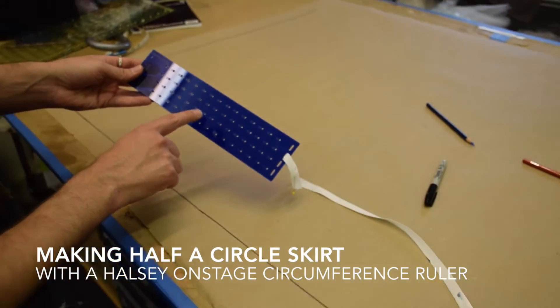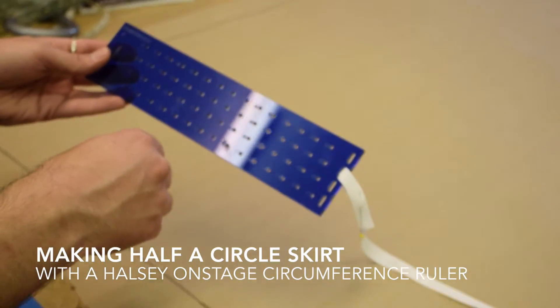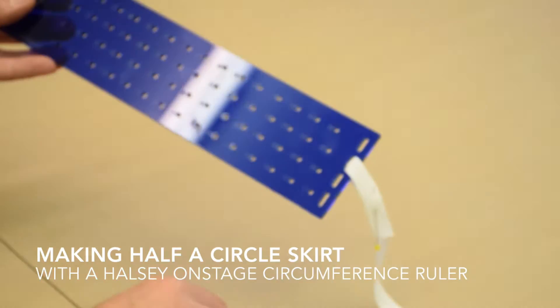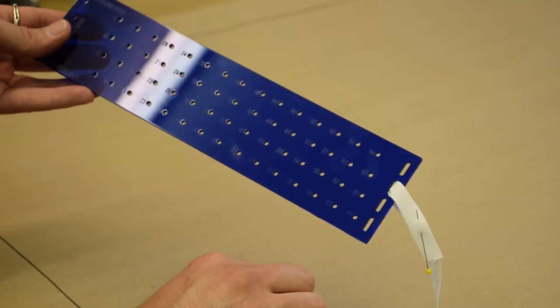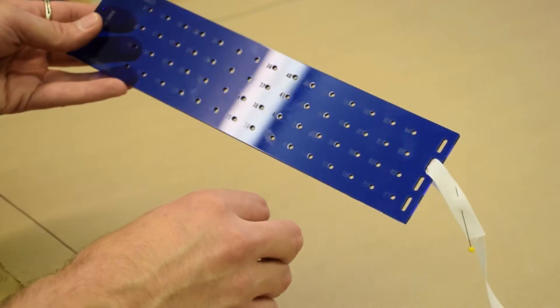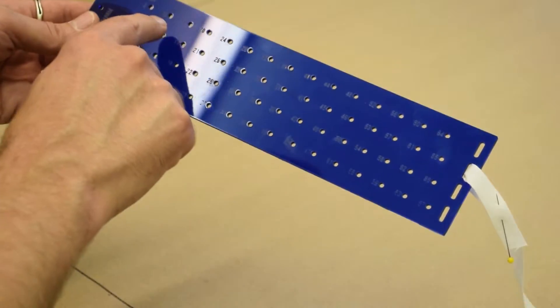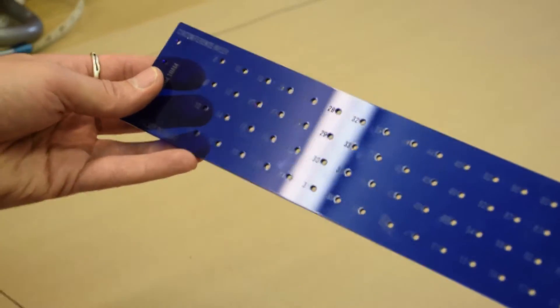So now we're going to draft half of a circle. We're not going to make a full circle, but we're going to make half of a circle. And we're going to say that this skirt is hanging off of the performer's high hip, and that her high hip is 32 inches.